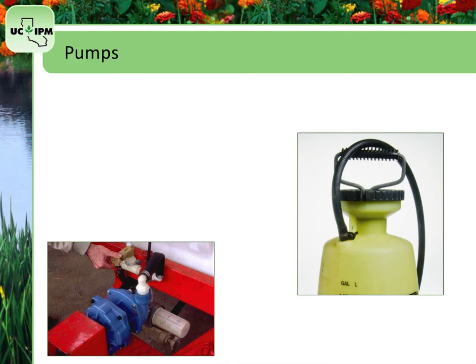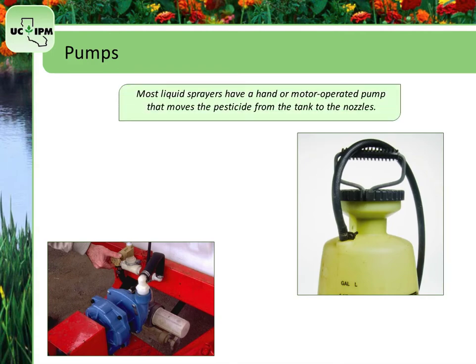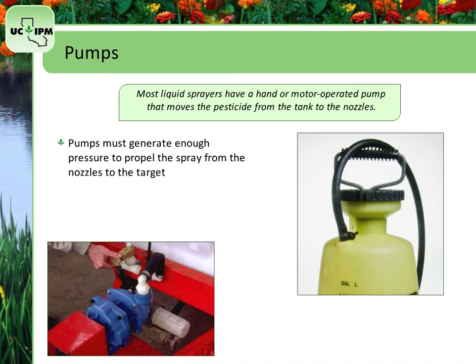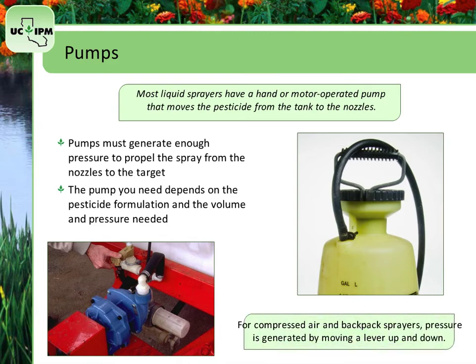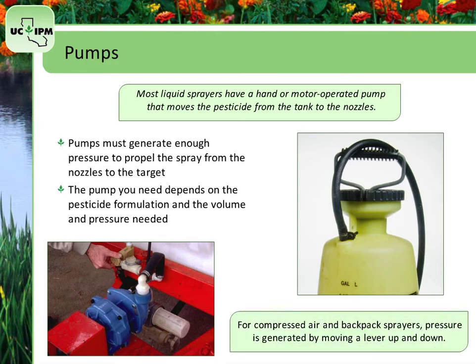Most liquid sprayers have a hand or motor-operated pump that moves the pesticide from the tank to the nozzles. The pump must generate enough pressure to propel the spray from the nozzles to the target. The pump you need depends upon the pesticide formulation you are using and the volume and pressure needed to apply the pesticide. For compressed air and backpack sprayers, pressure in these pumps is generated by moving a lever up and down.